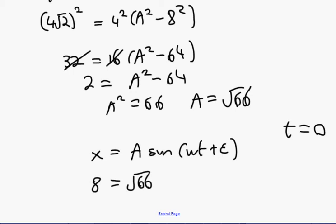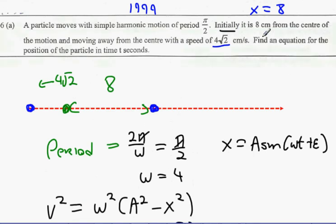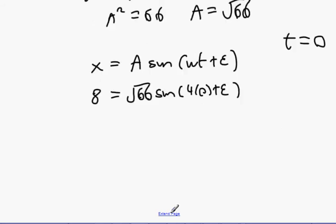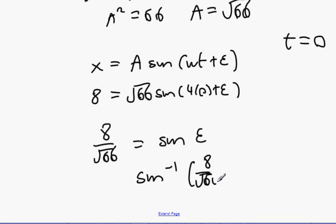Initially, t equals 0. x equals 8 when t equals 0. So it's going to be sine 4 times 0 plus ε. And then, we're going to get 8 over √66 equals sine ε. Sine ε is going to be sine inverse 8 over √66. And what we should get is 1.4 radians.